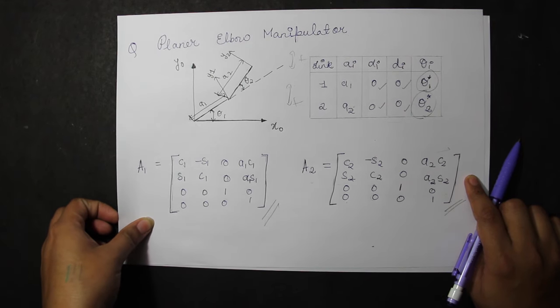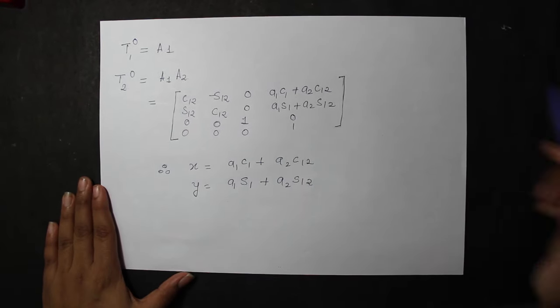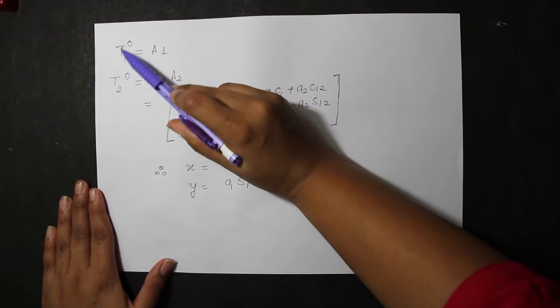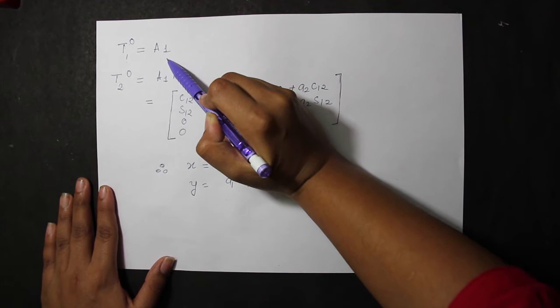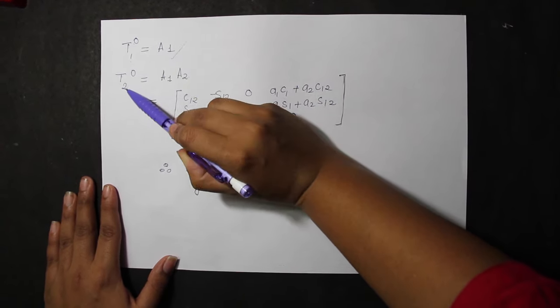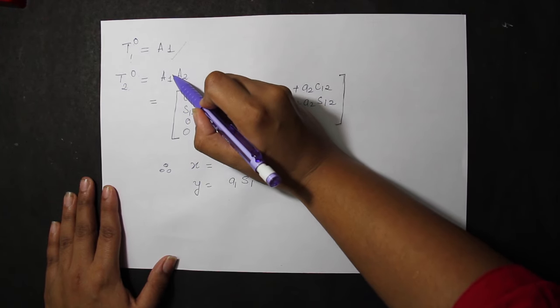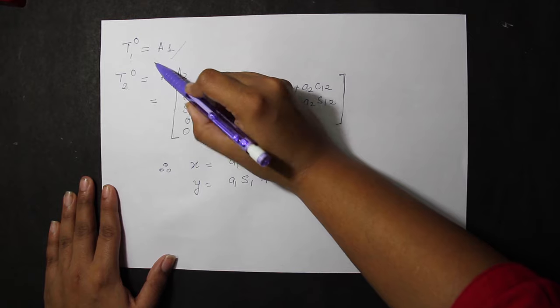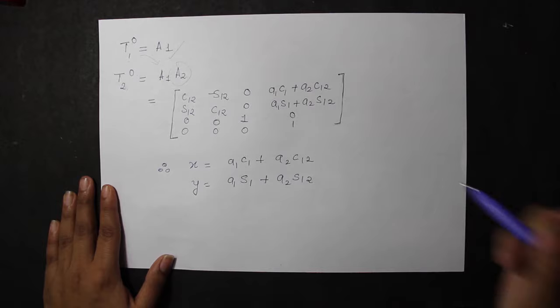We know that T1 with respect to the 0th frame is A1 because it is a homogeneous matrix. But we want to find out when T2 with respect to the 0th frame will be T1 with respect to 0th frame and A2. That is, our final matrix will be A1 into A2.